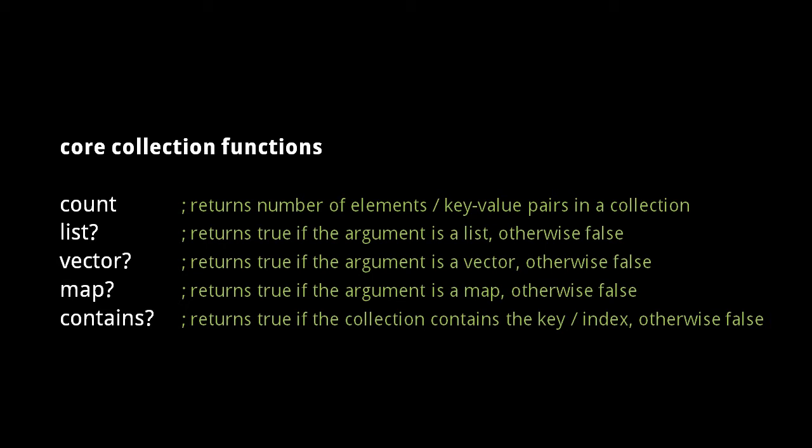First, the count function returns the number of elements or key-value pairs in a collection. The list? function returns true if the argument is a list, otherwise it returns false. vector? returns true if the argument is a vector, otherwise it returns false. And map? returns true if the argument is a map, otherwise it returns false. The contains? function returns true if the collection contains a specified key or index, and otherwise it returns false.